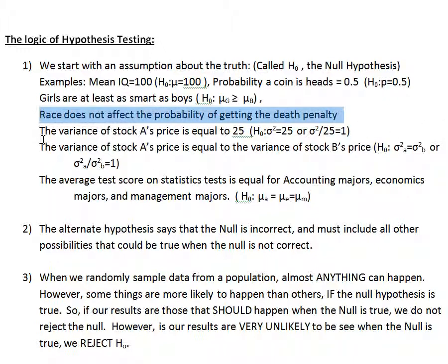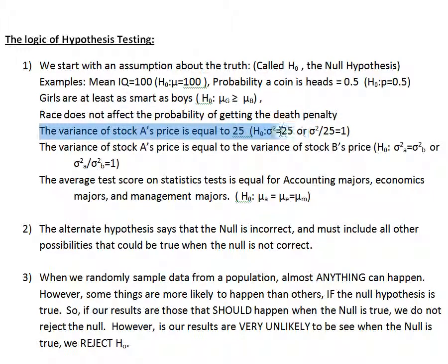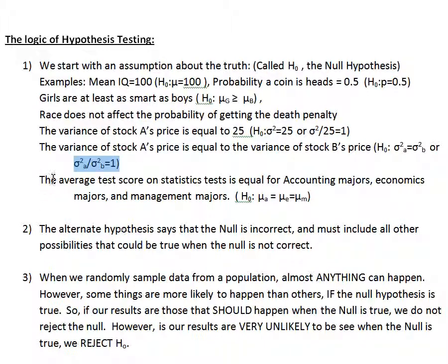This is kind of easy once you see a few. The null that the variance of stock A equals 25 has an alternate: the variance is not equal to 25. If we wrote it as the variance divided by 25 equals 1, the alternate is that the variance divided by 25 is not equal to 1. For the variance of A divided by the variance of B equals 1, the alternate is that the variance of A divided by the variance of B is not equal to 1.